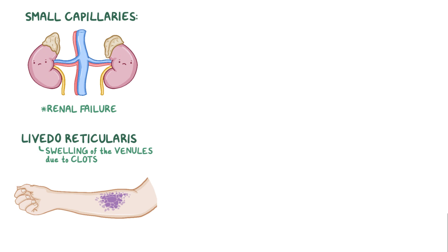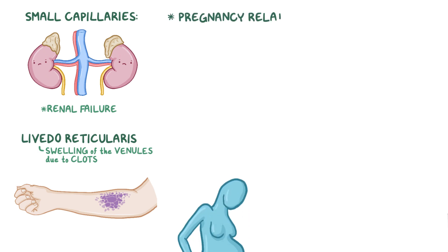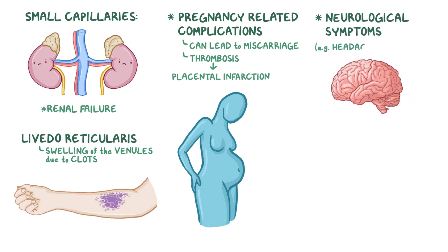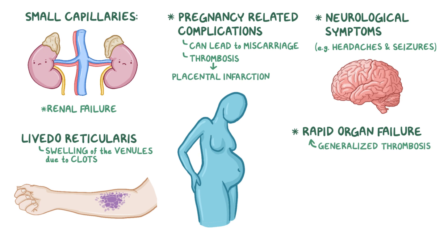Women affected by antiphospholipid syndrome tend to have pregnancy-related complications that can lead to a miscarriage, due to thrombosis leading to placental infarction. For reasons that aren't completely understood, antiphospholipid antibodies are thought to cause neurologic symptoms like headaches and seizures. In rare cases, antiphospholipid syndrome leads to rapid organ failure due to generalized thrombosis — this is called catastrophic antiphospholipid syndrome, and can lead to death.